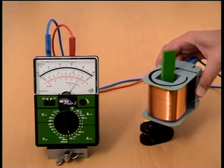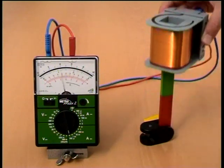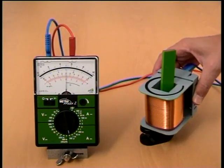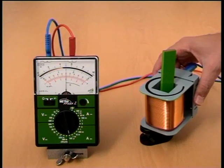Al igual que en los casos anteriores, cuando no hay movimiento relativo entre la bobina y el imán, no existe corriente inducida y, por lo tanto, la aguja del amperímetro no se mueve.